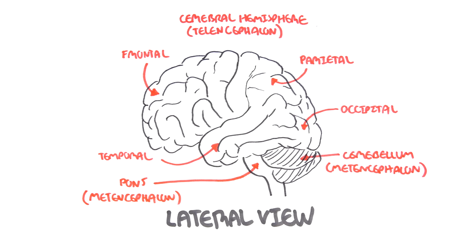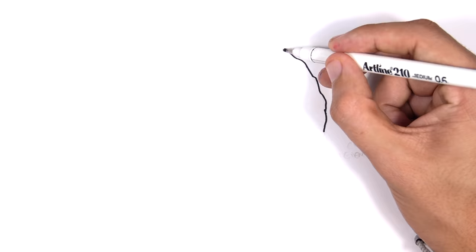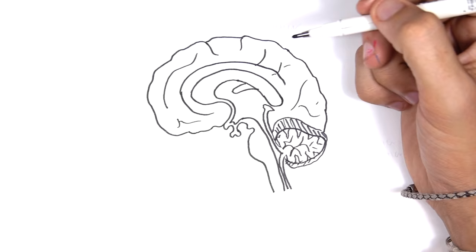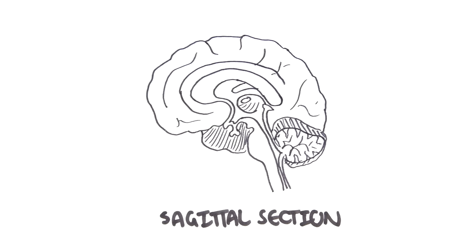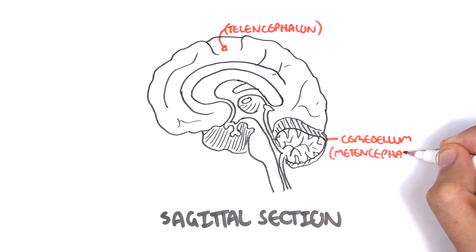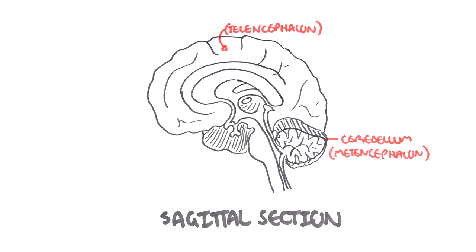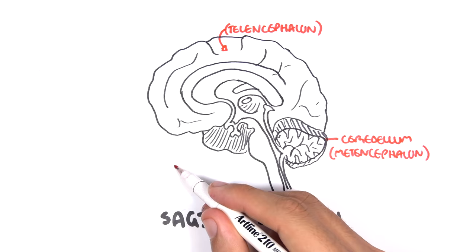Now let us take a sagittal section of the brain and see what anatomical structures are important to note. The cerebral cortex is your telencephalon. You have the cerebellum, which is your metencephalon, together with your pons. The brainstem is made up of three sections from top to bottom: the midbrain, the pons, and the medulla oblongata.